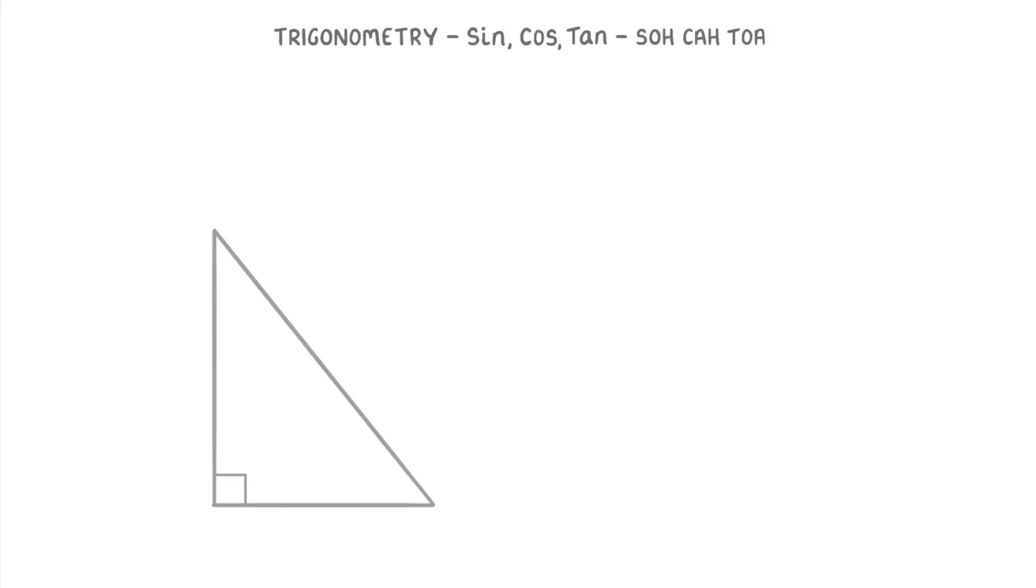The first thing you need to know is that you can normally tell when a triangle is a right-angled triangle because it will have this little square in one of the corners, which tells us that it's 90 degrees, so a right angle.